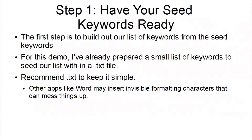During this stage we'll be making sure you've built out your list of seed keywords. For the purposes of this demo, I've already prepared a small list of keywords to seed our main list with, and I've put them into a simple .txt file. Those open in Notepad if you're on Windows. I recommend using a .txt file to keep it simple, because other apps like Word may insert invisible formatting characters that can mess things up. With plain text, there's nothing that can cause you any problems.